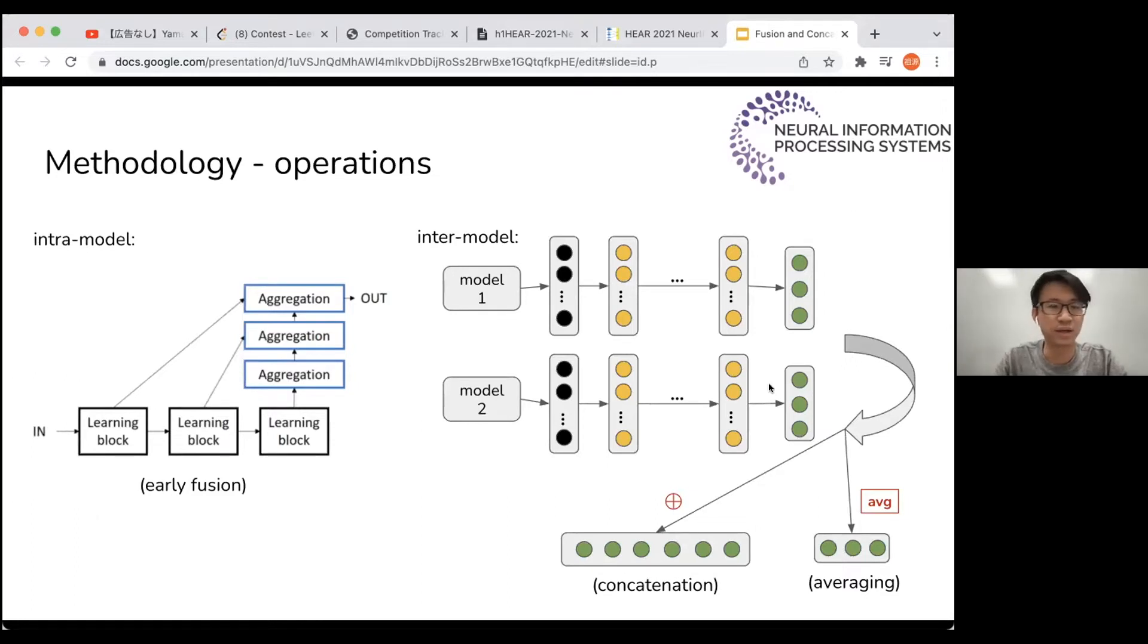For methodology, we can easily come up with several basic yet powerful techniques to fuse more than one model. For example, early fusion can be used for intra-model operation to get the multi-level features produced by one model. In terms of inter-model operations, concatenation and averaging are two possible measures to fuse outputs of several models.